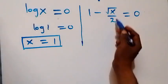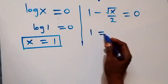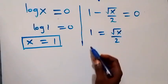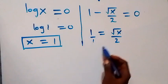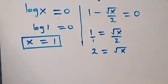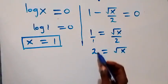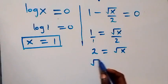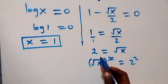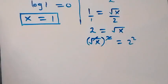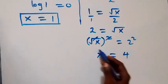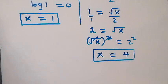For case two: one minus root x over 2 equals zero. Taking root x over 2 to the other side gives one equals root x over 2. Cross-multiplying: 2 equals root x. Squaring both sides, x equals 2 squared, which is 4. So we also have x equals 4.